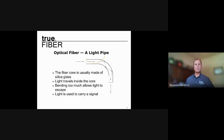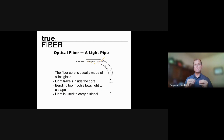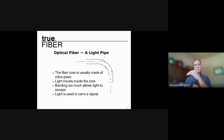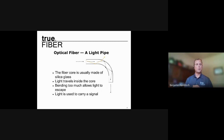Optical fiber can be thought of as a light pipe — basically used to transmit photons from point A to point B. It's usually made of silica glass. As light is transmitted, it travels down the inside of the core. In multimode fiber specifically, that light is bouncing down the core back and forth, and light is what carries the signal down the optical fiber.